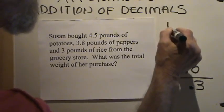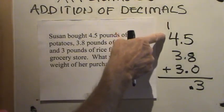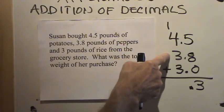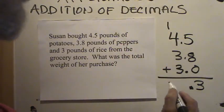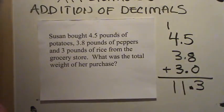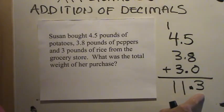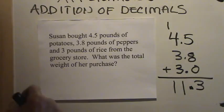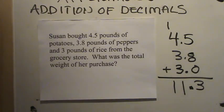This one I'll let you work on your own, and then we'll work it together. Let's read it out loud. Susan bought 4.5 pounds of potatoes, 3 and 8-tenths pounds of peppers, and 3 pounds of rice from the grocery store. What was the total weight of her purchases? Put the video on pause, work this problem, then turn it back on and we'll take a look at how we solve it.